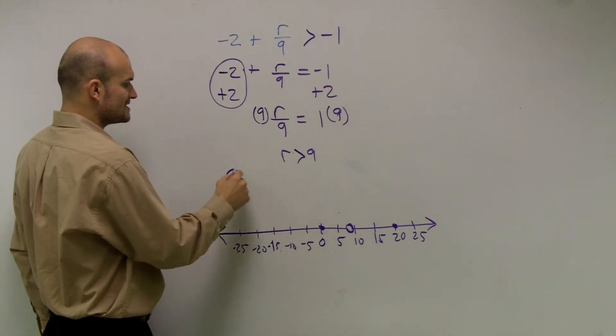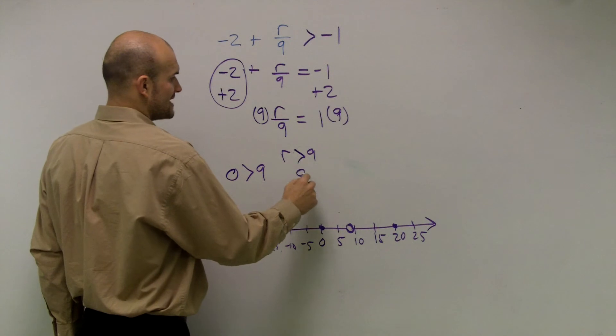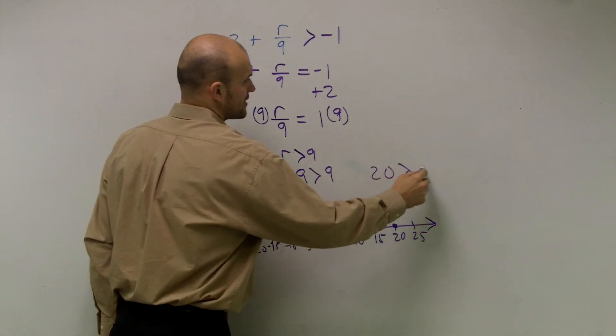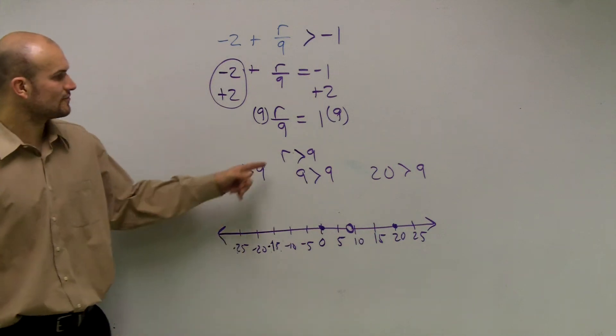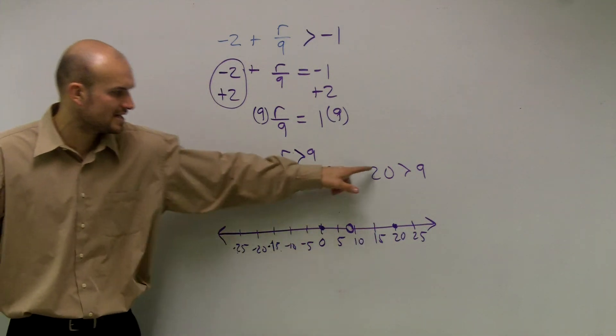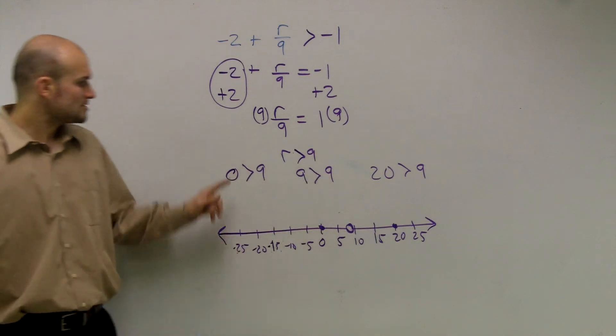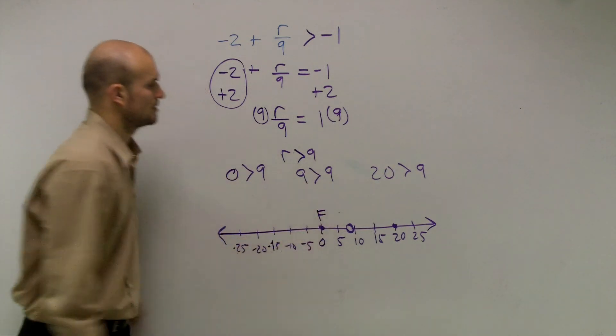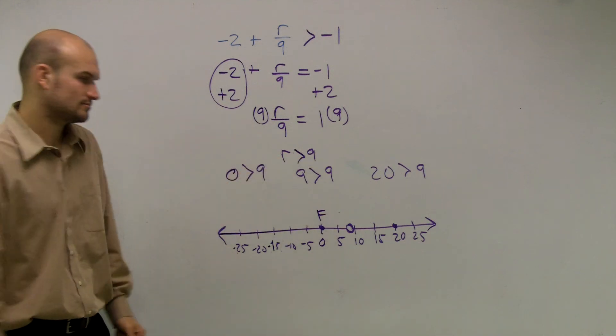So therefore, I say, is 0 greater than 9? Is 9 greater than 9? And is 20 greater than 9? So if you guys noticed, for all my R's, what I did is I plugged in the three points that I wrote down. So is 0 greater than 9? False.